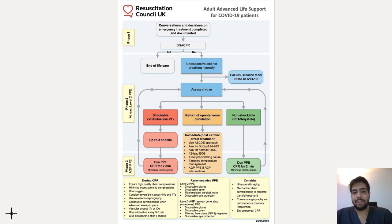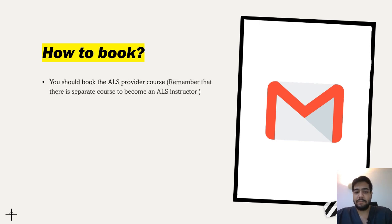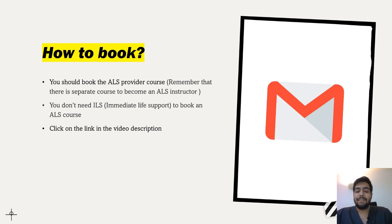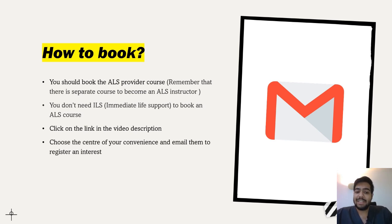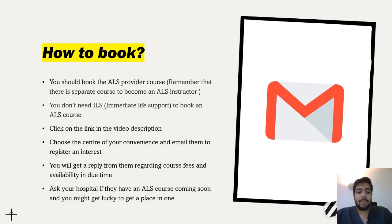A frequently asked question is: how do you book the ALS course? First, book the ALS provider course — remember there is a separate course for ALS instructors, so make sure you go for the provider course. You do not need ILS (Immediate Life Support) to book ALS; you can go directly. Click the link in the video description to find the booking page, choose a convenient center, and email them expressing your interest. They will reply with course details, fees, and availability. You can also ask your hospital if an ALS course is coming up soon.